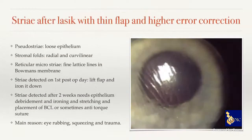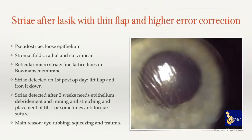Another common complication is striae — seen in LASIK with thin flap and higher corrections. When the flap sits on a highly ablated stromal bed, it tends to misalign, especially with a nasal hinge flap. If striae are missed in the early phase, they become chronic and require de-epithelialization to treat. Applying a drop of fluorescein immediately after LASIK treatment helps detect striae early.